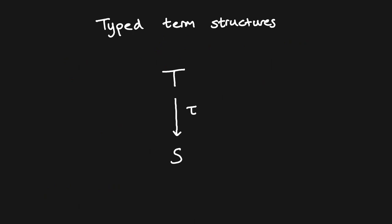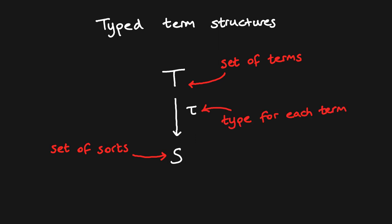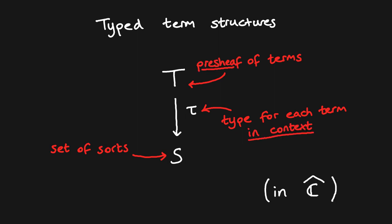Finally, let's consider the structure of terms. Terms will be fibred over their types, which means we associate a unique type to each term. Here S is the set of sorts and T is the set of terms. Tau assigns a type to each term, however, since we don't just consider closed terms — each term lives in some context Gamma — the set of terms is indexed over the category of contexts. T will be given by a presheaf on the category of contexts, that is, a functor from C^op to Set. Tau will be given by a natural transformation. Since types don't depend on their context in simple type theory, S will be given by the constant presheaf on the set of sorts.